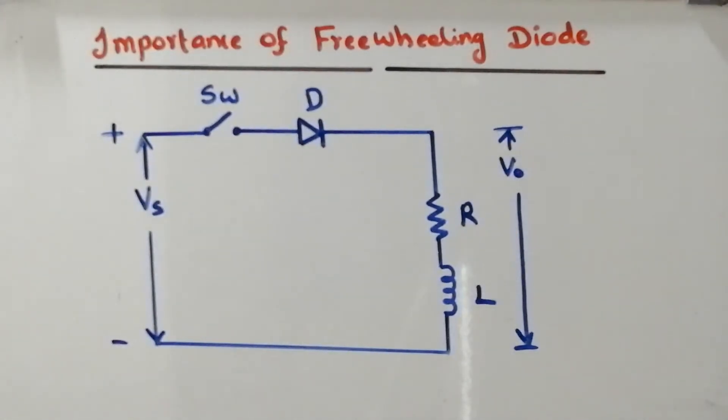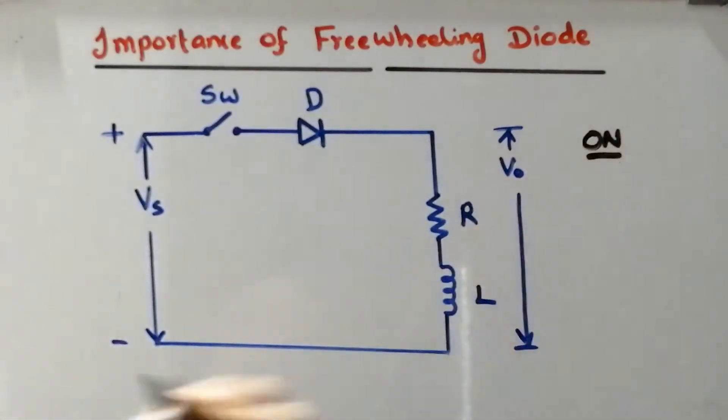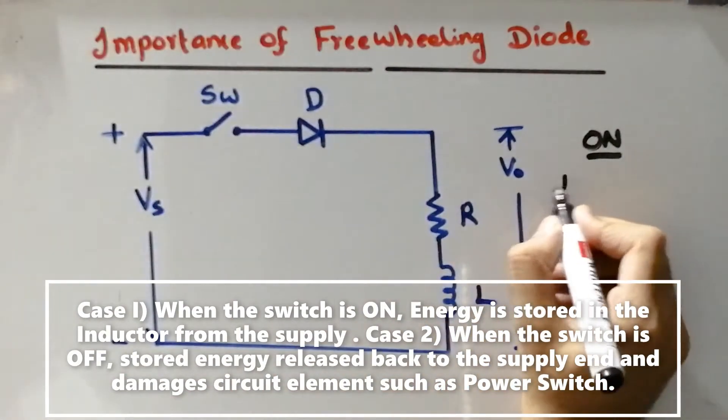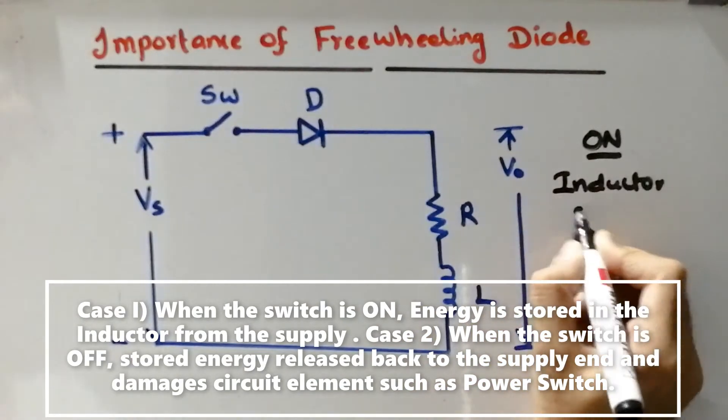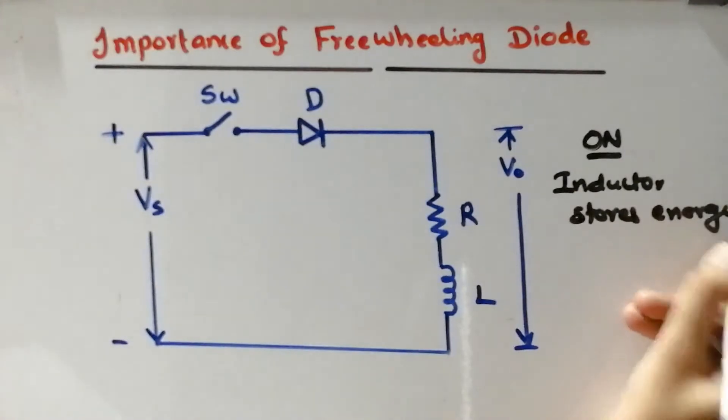So the circuit operates in two conditions. During on condition, let us see the peculiarities of the circuit. We are having an inductive load, so definitely during on condition the inductor stores energy. That means energy will be stored inside the inductor during on condition.